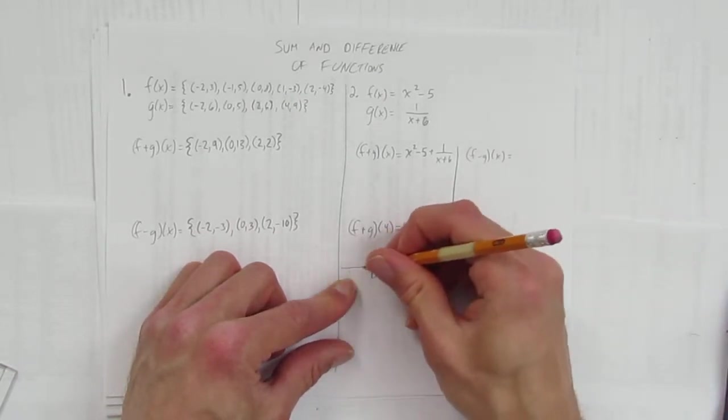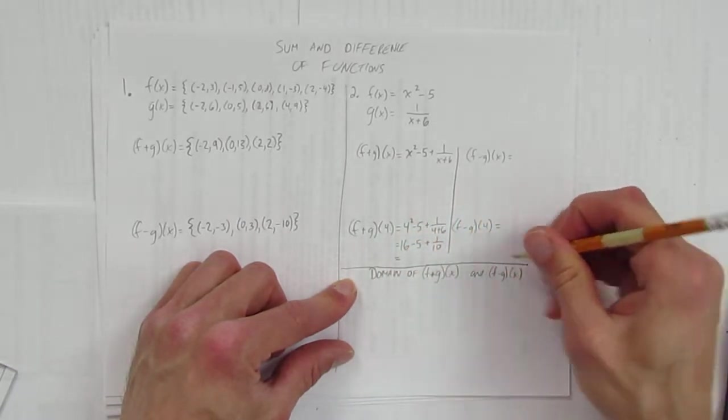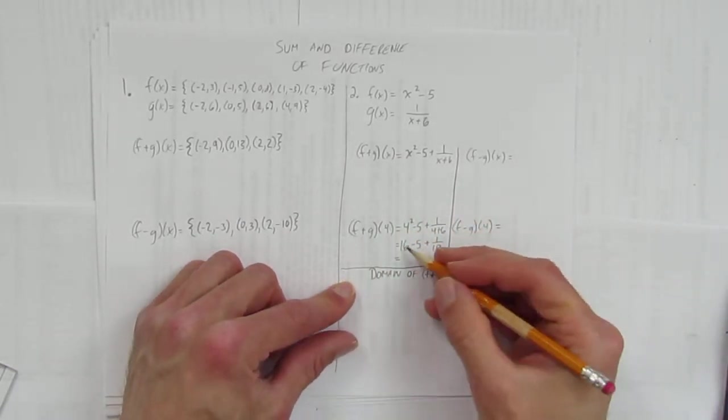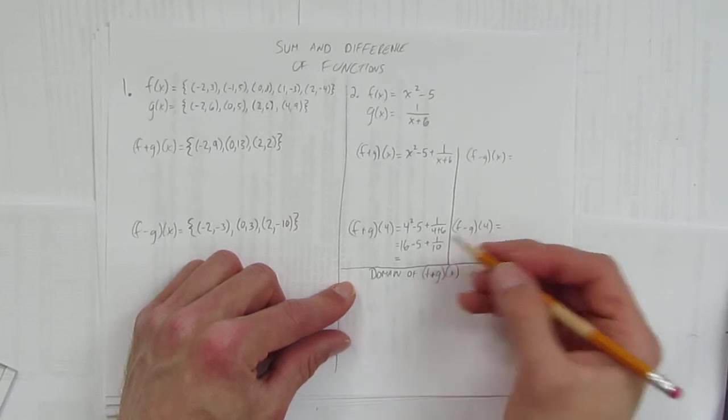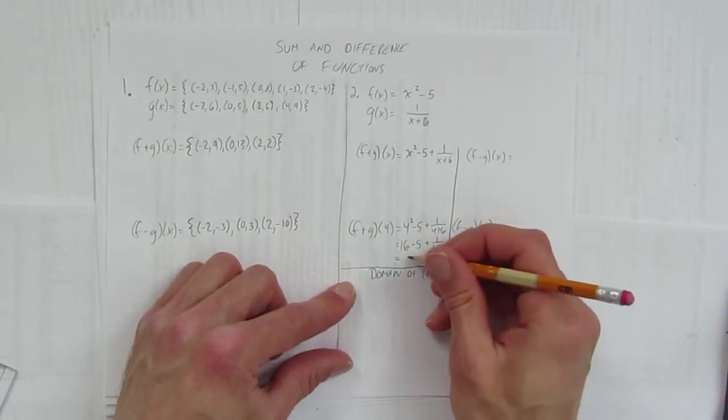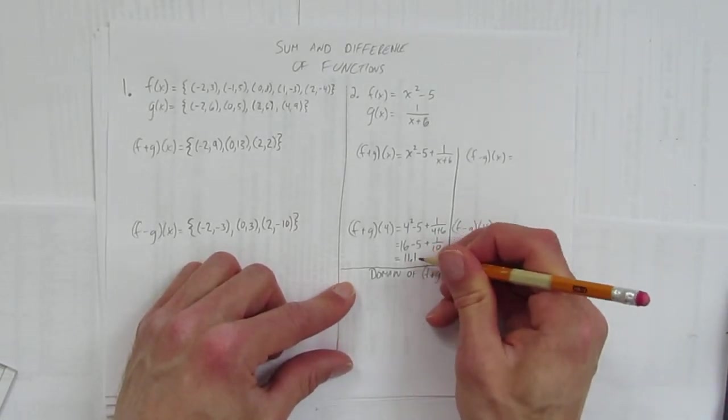Which gives you 4² is 16 - 5 + 1/10. You can do this on a calculator, but 16 take away 5 is just 11. 11 + 1/10 is 11.1.